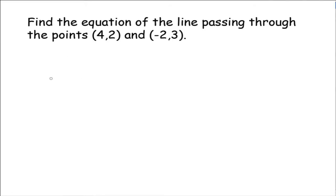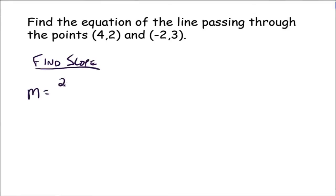So the first thing we need to do is find slope. m equals (2 minus 3) over (4 minus negative 2), which gives us negative 1 sixth. So the slope of our line is negative 1 sixth.